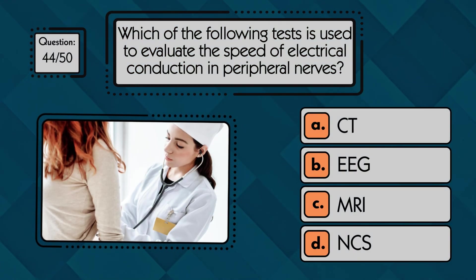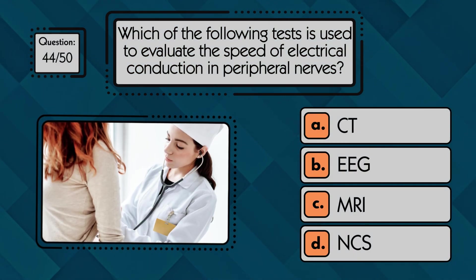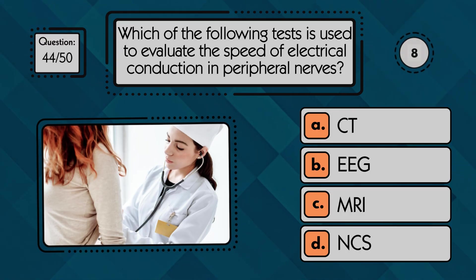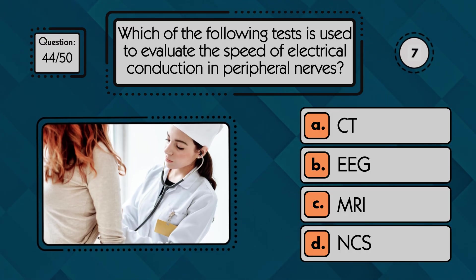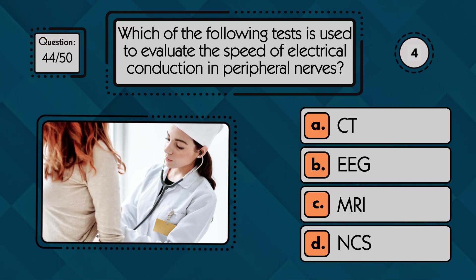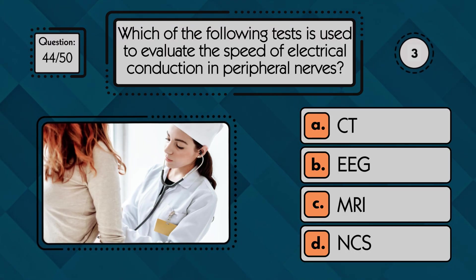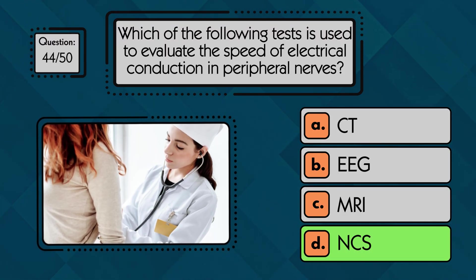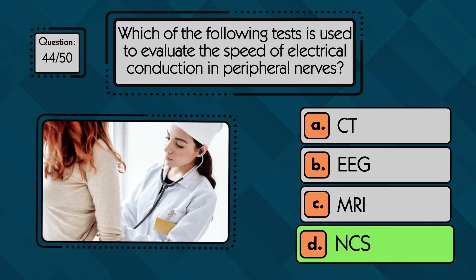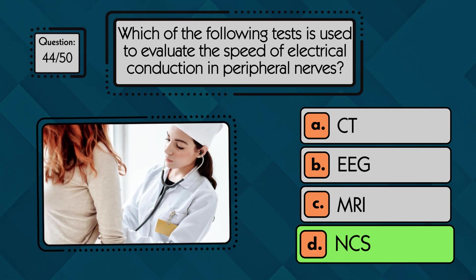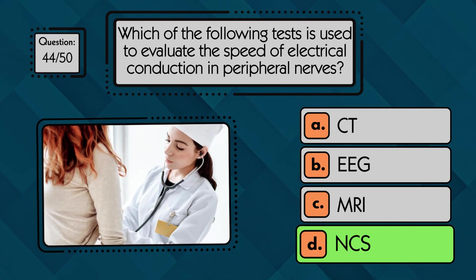Which test is used to evaluate the speed of electrical conduction in peripheral nerves? NCS, or nerve conduction study, is the test that measures how quickly electrical signals travel along peripheral nerves.